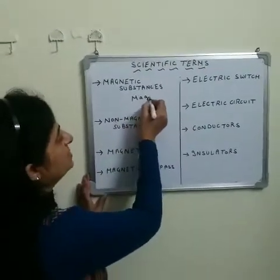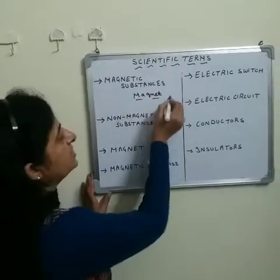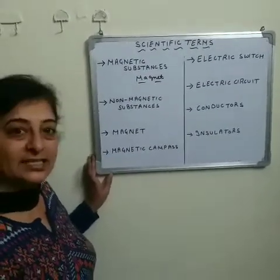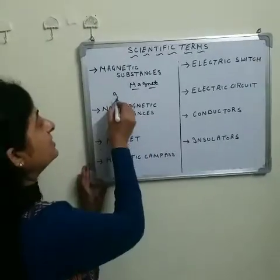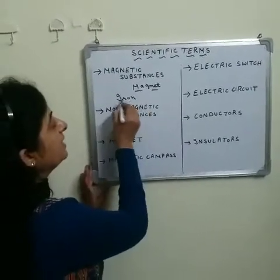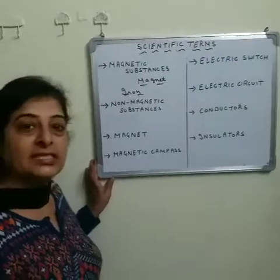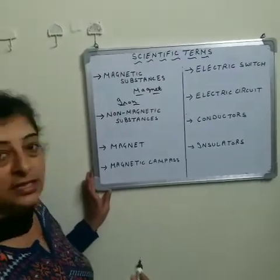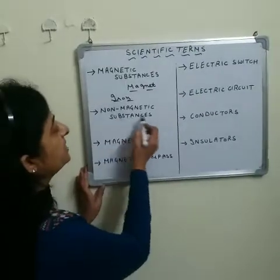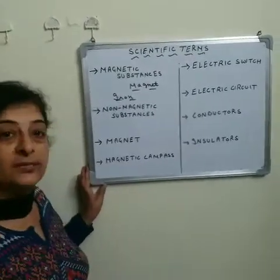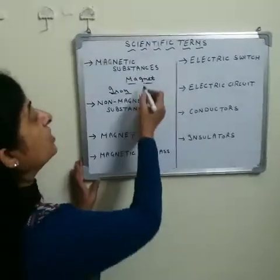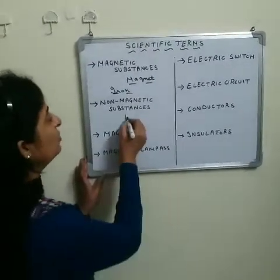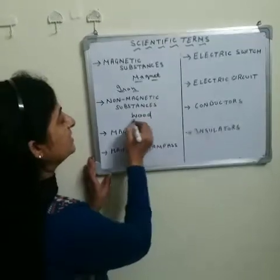Those substances which are attracted towards the magnet are known as magnetic substances, like iron, cobalt, and nickel. On the other hand, non-magnetic substances are those substances which are not attracted by the magnet, like wood and plastic.